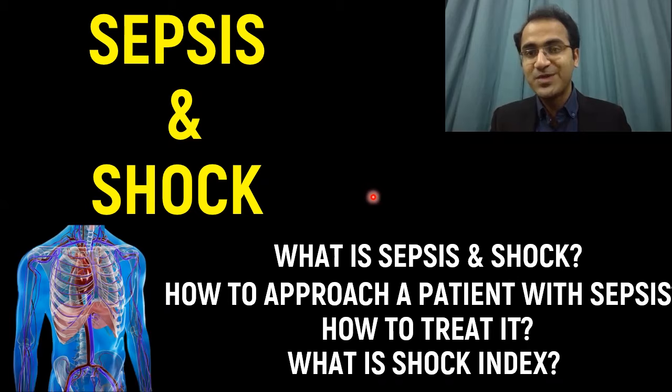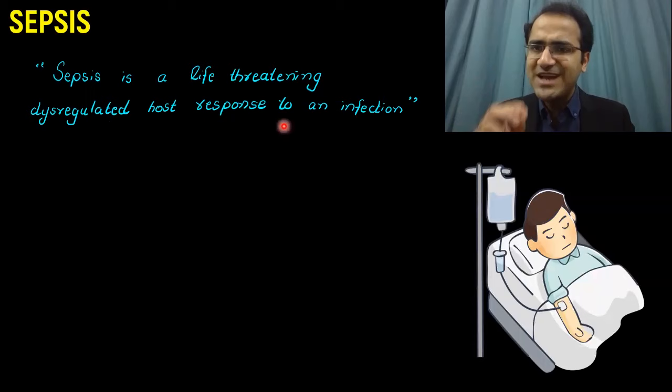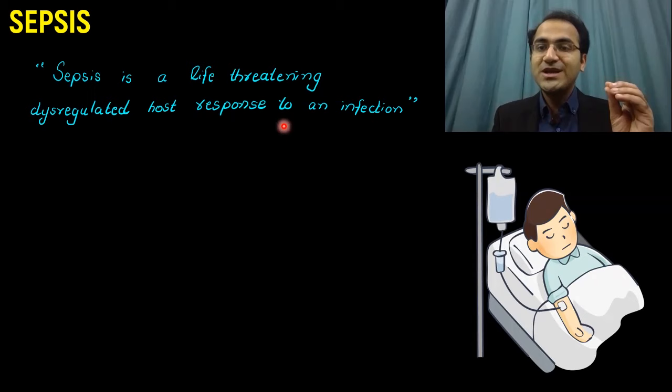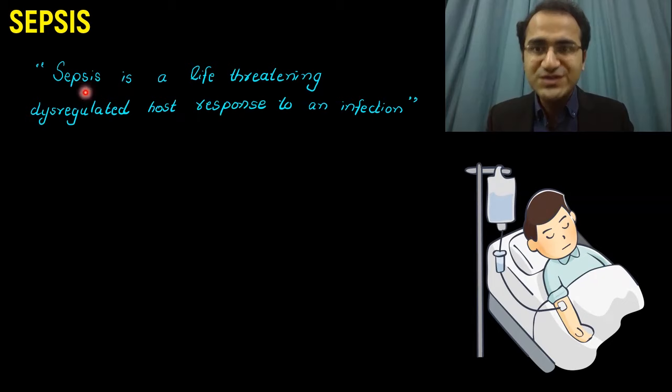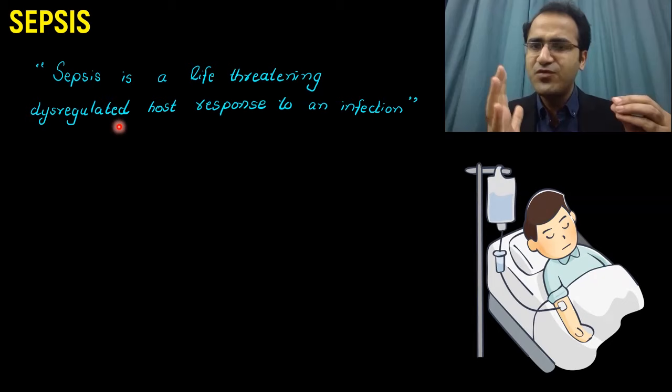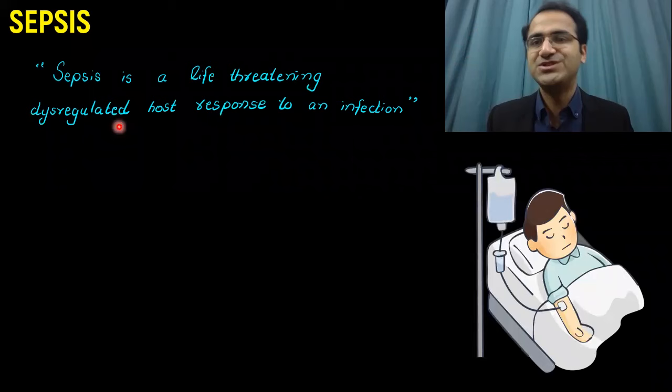What is sepsis? Sepsis is a life-threatening dysregulated host response to an infection. It means the body is carrying an infection. Normally, whenever there is infection in the body, the body has a regulated immune response to fight it. But in the condition of sepsis, the host response is dysregulated — the body's response instead of killing the microbes is actually damaging the body. That is sepsis: a dysregulated host response to an infection.